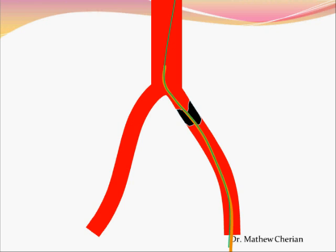That would mean you have taken the catheter from the retrograde route, placed the wire into the aorta, and you're ready to do the procedure as if you went retrograde. This is useful especially when you want to ensure that your stent is kept at a position just across the ostium, or when you have to do bilateral stenting in a patient with bilateral disease.